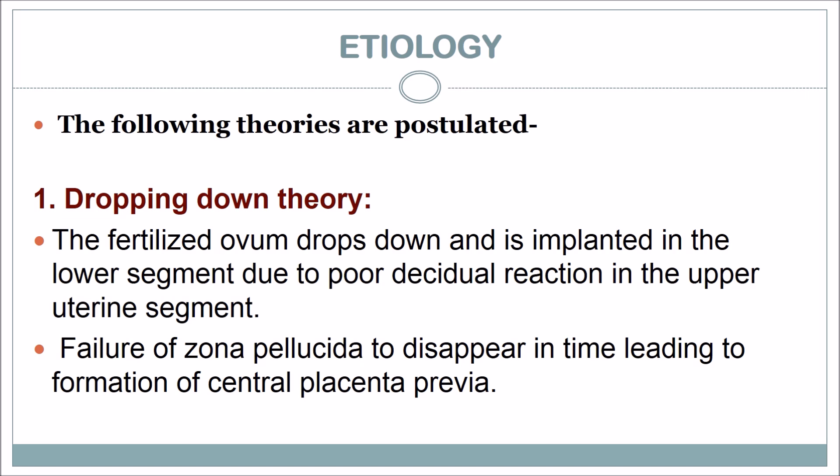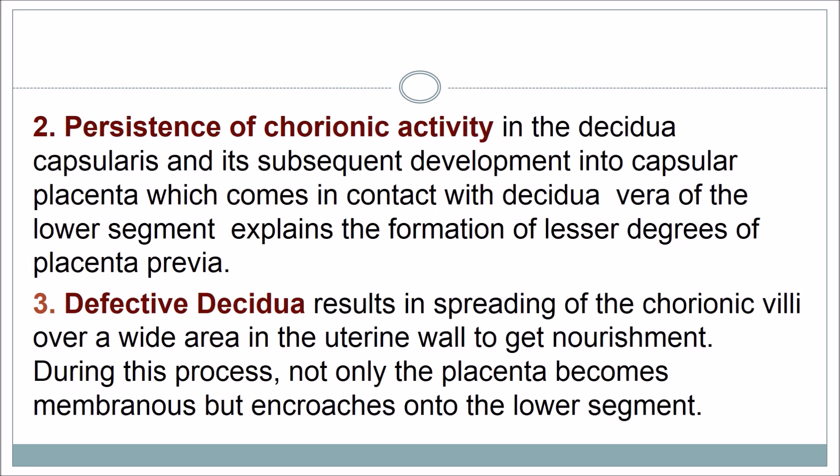The following theories are postulated. First, the dropping down theory: the fertilized ovum drops down and is implanted in the lower uterine segment due to poor decidual reaction in the upper uterine segment. Failure of the zona pellucida to disappear in time leads to formation of central placenta previa. Second, persistence of chorionic activity in the decidua capsularis and its subsequent development into capsular placenta.